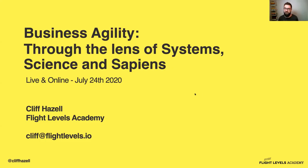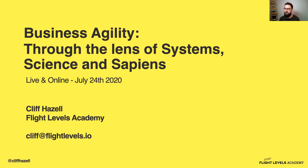The more important stuff I put at the beginning, so we'll see how it goes. The talk is titled 'Business Agility Through the Lenses of System Science and Sapiens,' and I'm going to jump straight into it with a little bit of background.